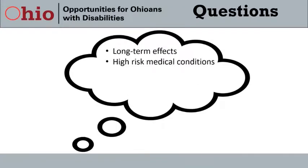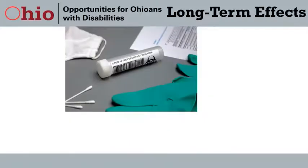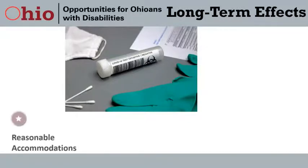Now we are going to talk about reasonable accommodations specific to returning to the workplace. Five common areas where employers have questions at this point during the pandemic are the long-term effects of COVID, high-risk medical conditions, mental health disabilities, telework, and hybrid workplaces. The long-term effects people have reported after recovering from COVID-19 include brain fog, extreme fatigue, shortness of breath, headaches, insomnia, joint pain and body aches, and tachycardia, which is a rapid heart rate.